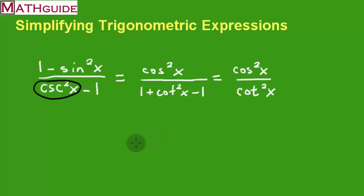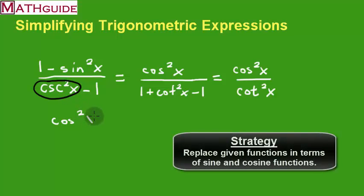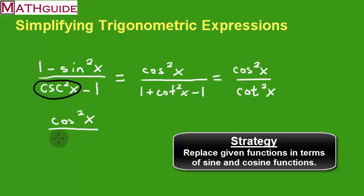Now, one of the strategies you're supposed to use with these problems is: if you get stuck — and right now it looks like I'm kind of stuck thinking, well, what do I do next — what you should do is replace everything in terms of sines and cosines. The numerator is already a cosine. What I'd like to do is change this denominator. I know cotangent is equal to cosine over sine, but since it's squared, it's going to be cosine squared over sine squared.